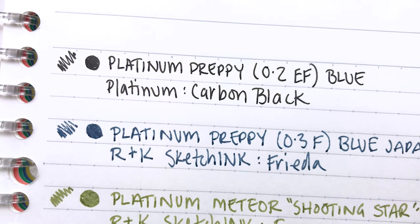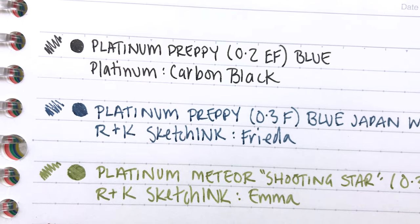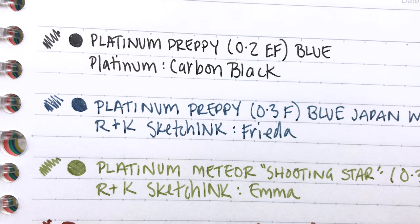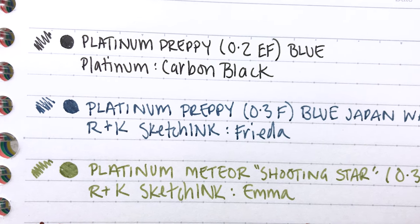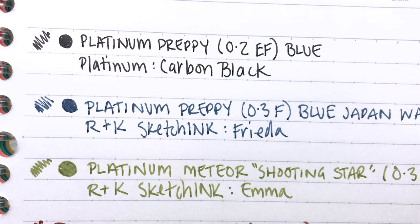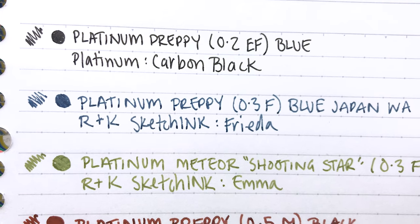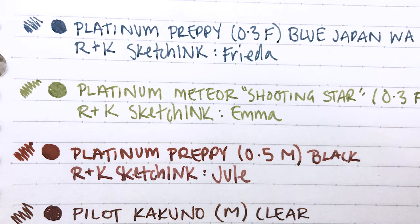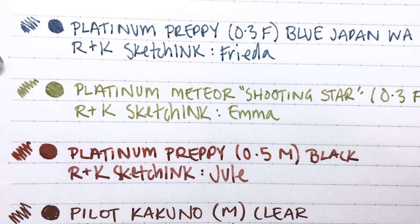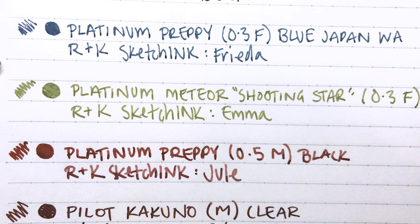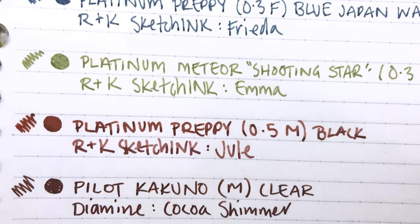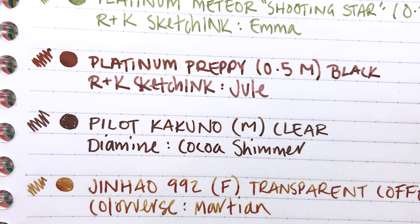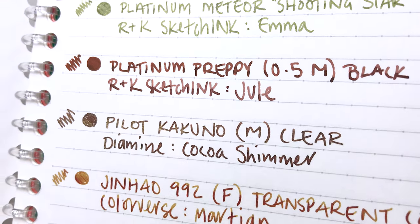Here are our writing samples up close. You can see that 0.2 Extra Fine is just a little thinner than the fine for the Platinum Preppy. The Meteor Shooting Star, which is the same as the 0.3 Preppy above, is very similar. And then look at this Platinum Preppy Medium 0.5. I think this writes really a lot heavier than the 0.3s. It's a lot wetter, super smooth. It's a really nice nib.